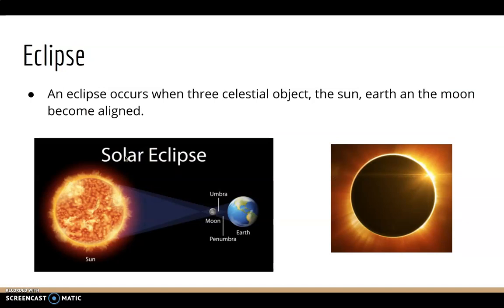Next we have eclipse. We all know what this is, but most of us have never seen it before because it's kind of rare. An eclipse occurs when three celestial objects—the Sun, the Moon, and the Earth—become aligned.